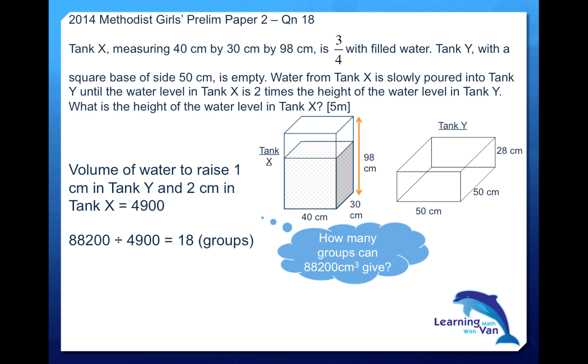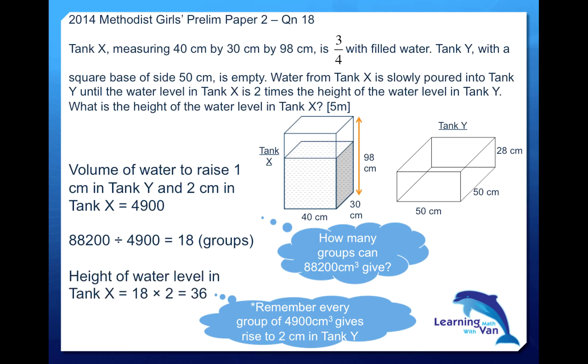So what is the height of the water level in Tank X? Remember that every group of 4,900 will give rise to 2 centimeters in Tank X. So with 18 groups, you have 18 groups of 2 centimeter rise or increase. So it should be 18 times 2, that gives us 36 centimeters. So the height of the water level in Tank X is 36 centimeters.